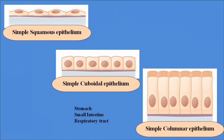Simple columnar epithelium also lines the respiratory tract, specifically in the trachea, where it is ciliated. The cilia are involved in trapping foreign substances or inhaled particles that enter the respiratory system. The ciliated columnar epithelium moves these inhaled particles towards the throat by the cilia, removing foreign particles and projecting them out of the respiratory tract.